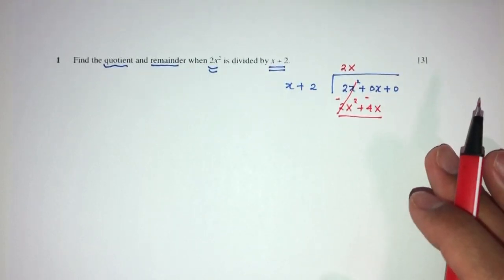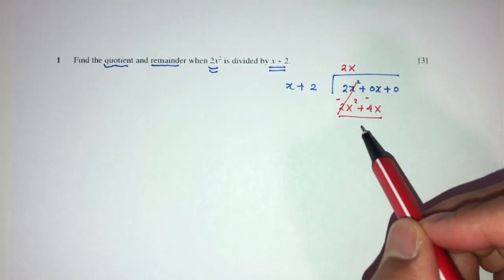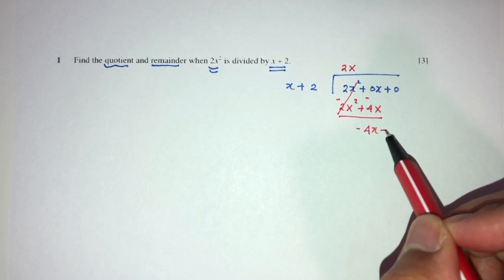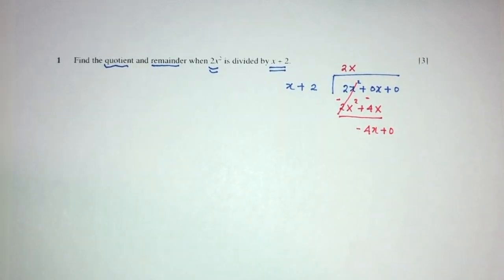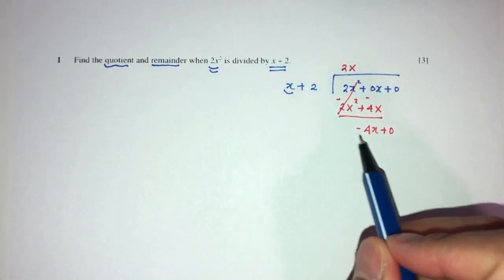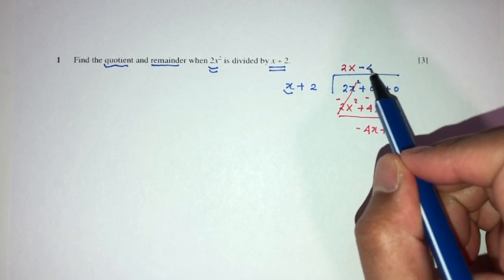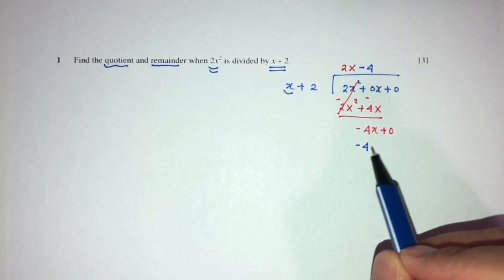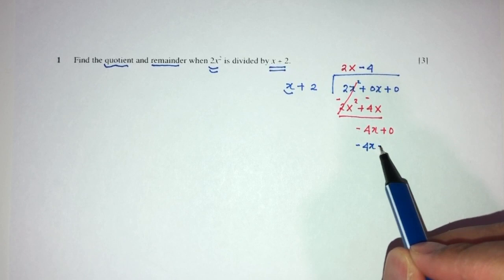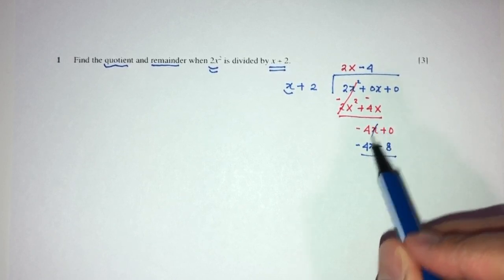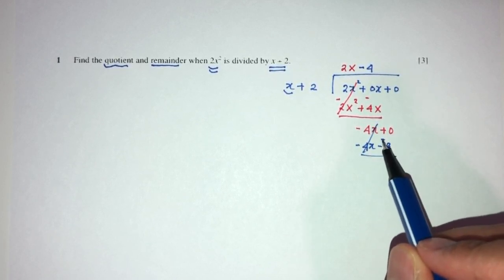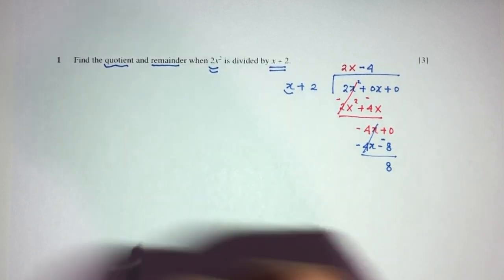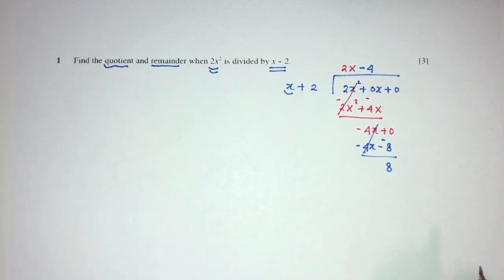0 minus this one. So again, 0 minus this will be minus 4x plus 0. Now, how can you make x become minus 4x? Times minus 4. That will become minus 4x minus 8. This will go away. 0 minus minus become plus, so plus it will be 8. Okay, so we're done now.